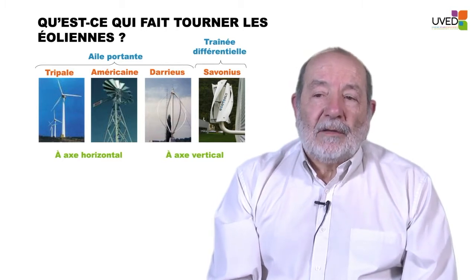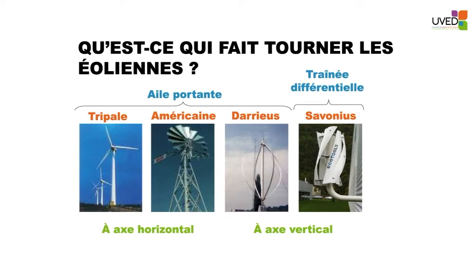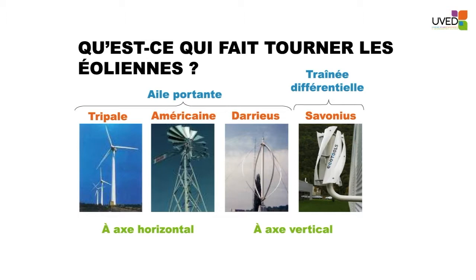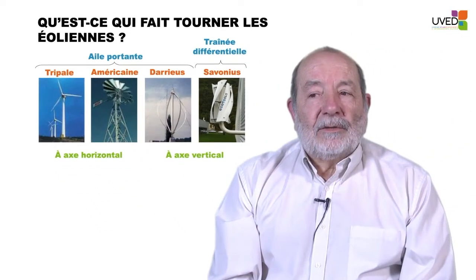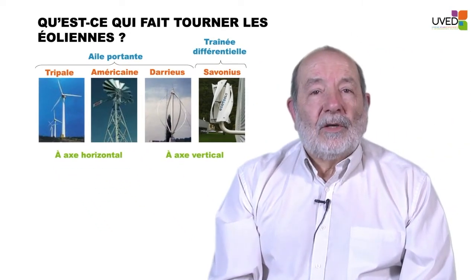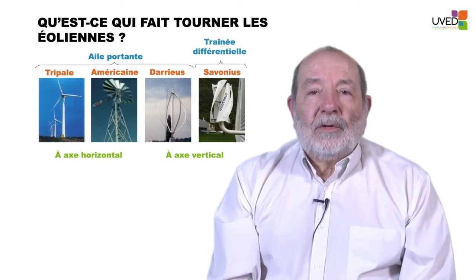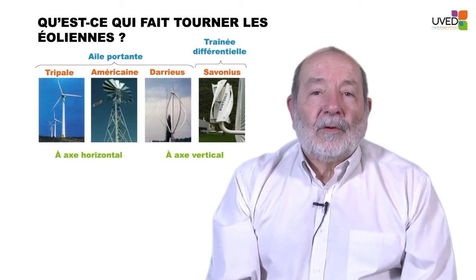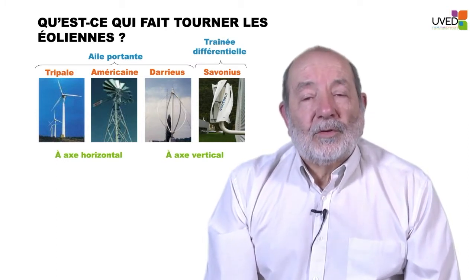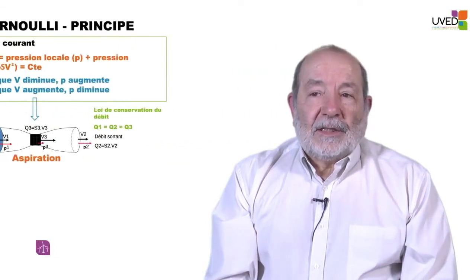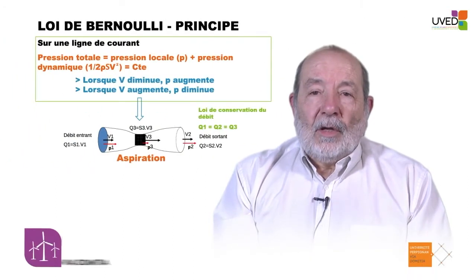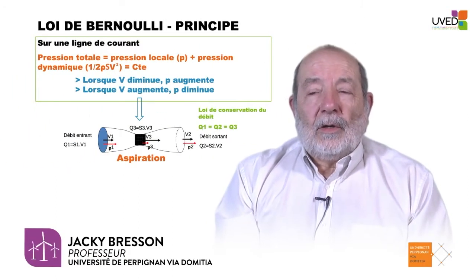Next question: why do the blades rotate? There are two types of windmills: horizontal axis and vertical axis. All horizontal axis windmills function according to the airfoil principle, and the Darrieus vertical axis windmill operates the same way. However, the Savonius system with a vertical axis is based on the differential drag principle.